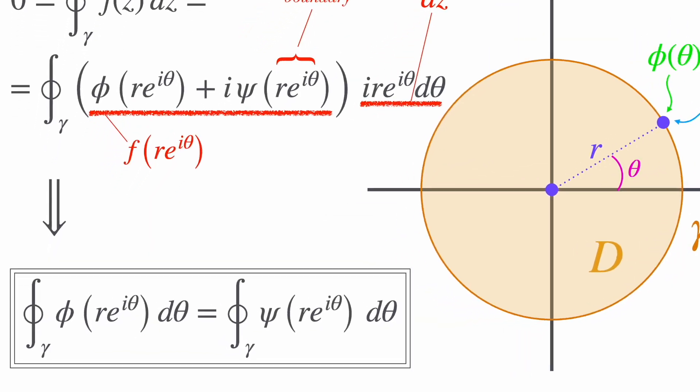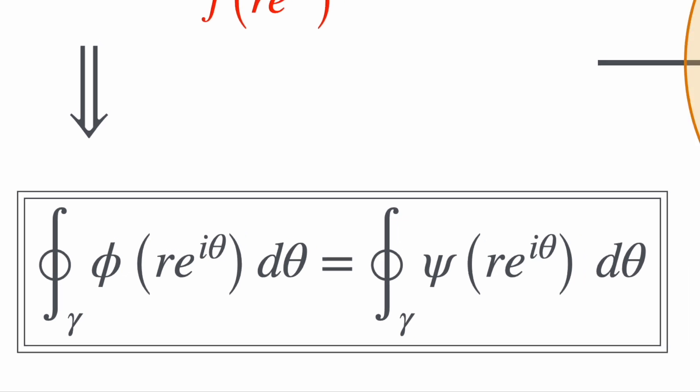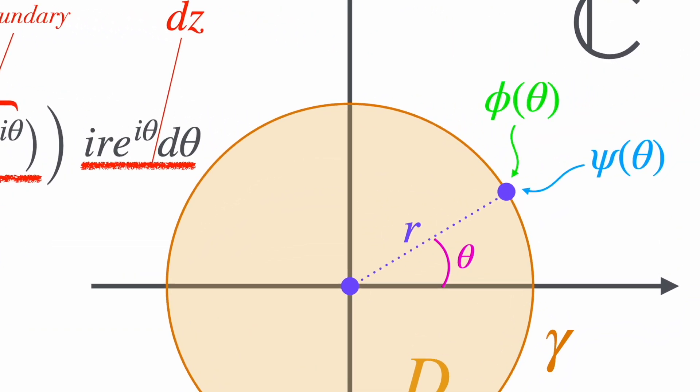Physically, this means that the contribution of the electric potential and the stream function, weighted by the exponential factor e to the power of i theta, balance out over the boundary of the closed curve. This symmetry is important because it helps us to predict physical phenomena.